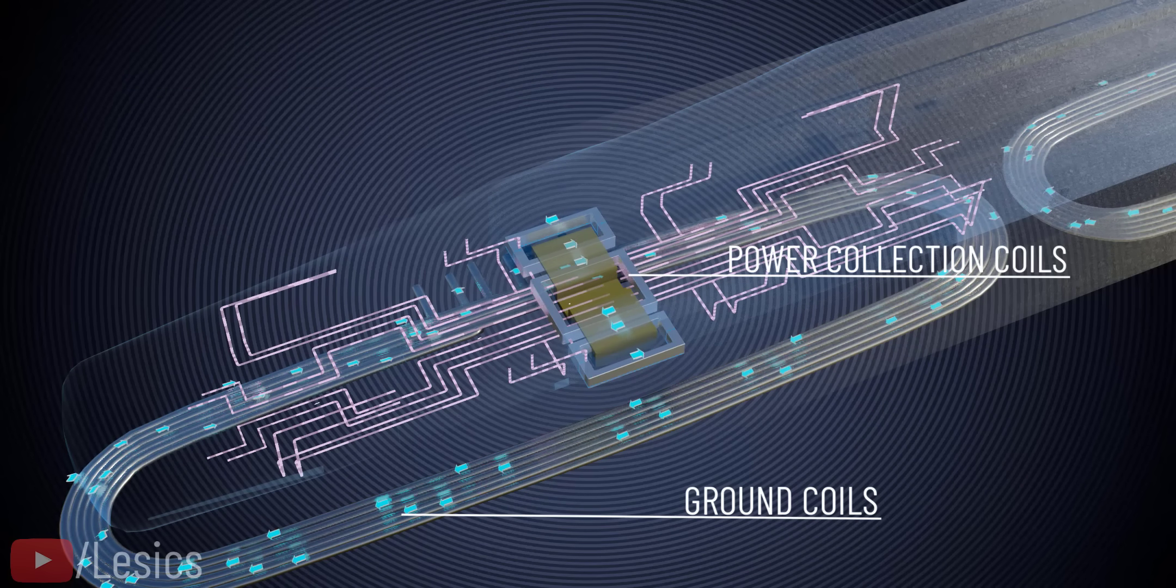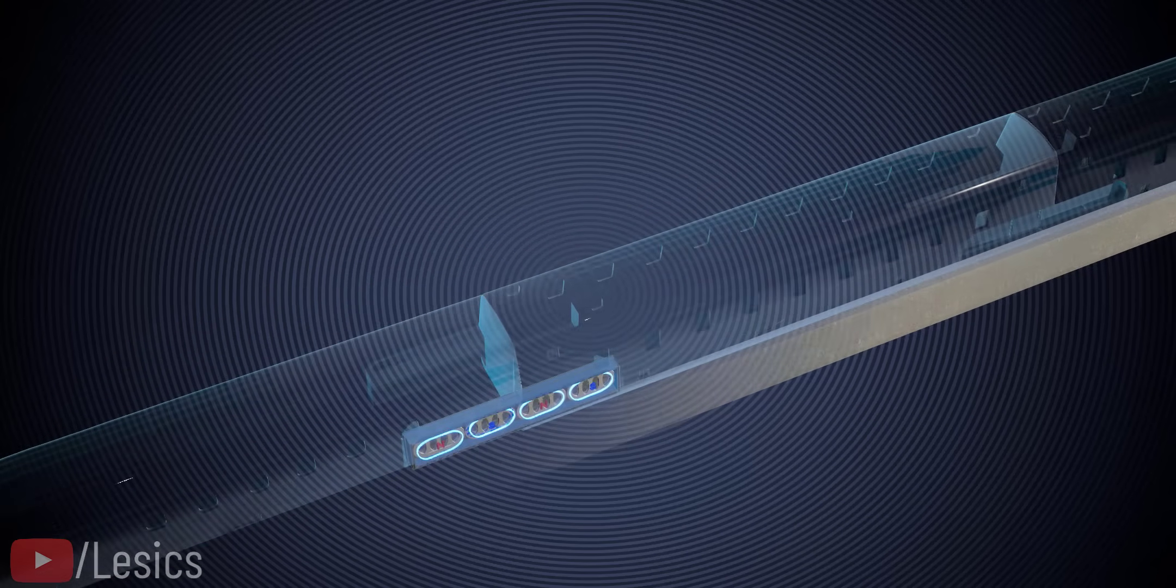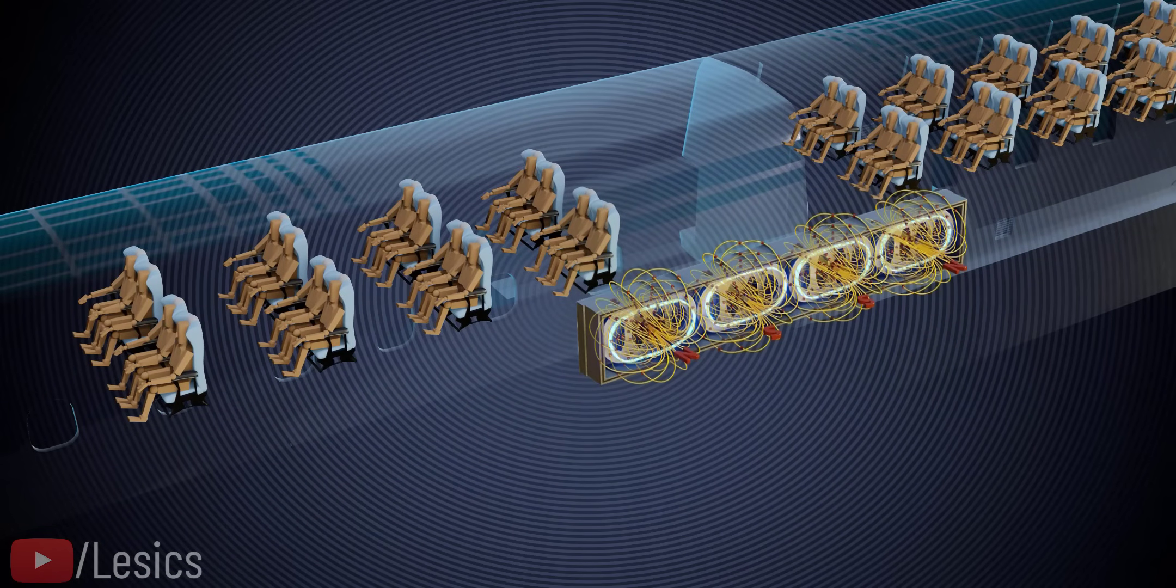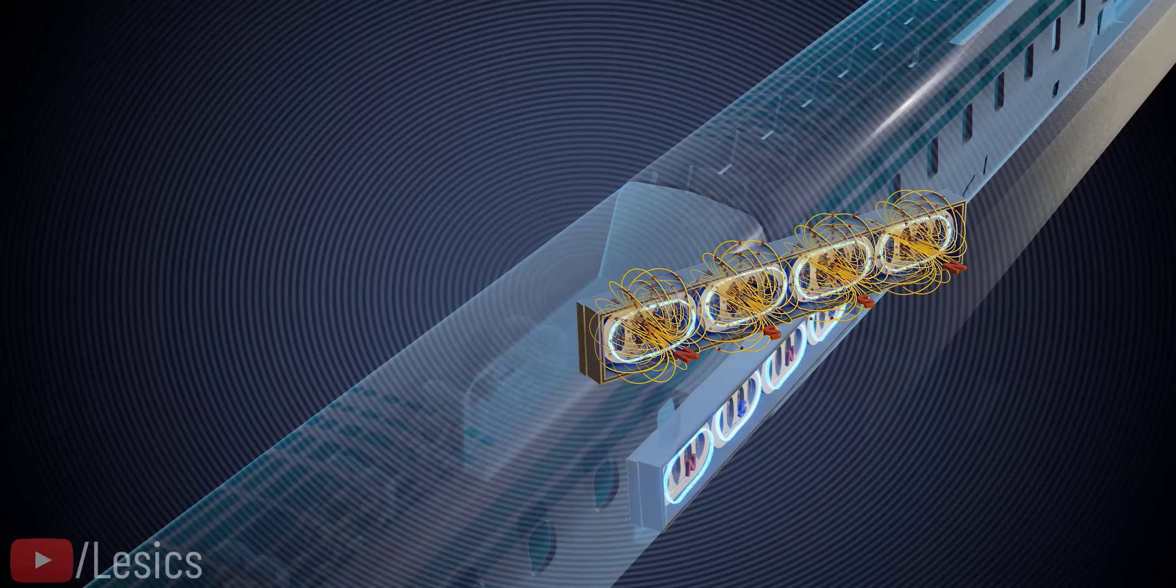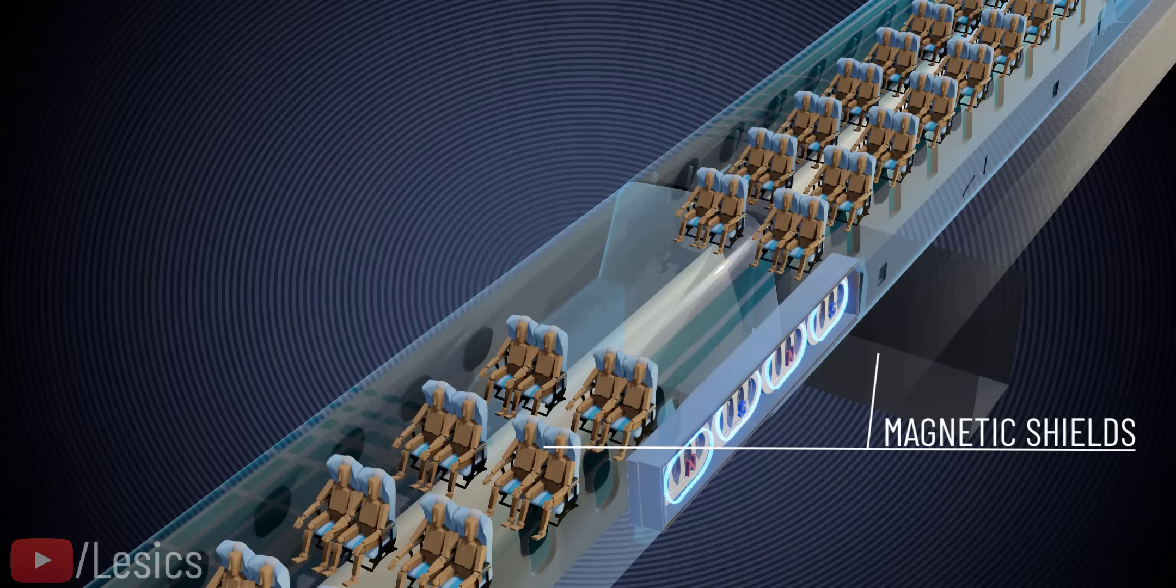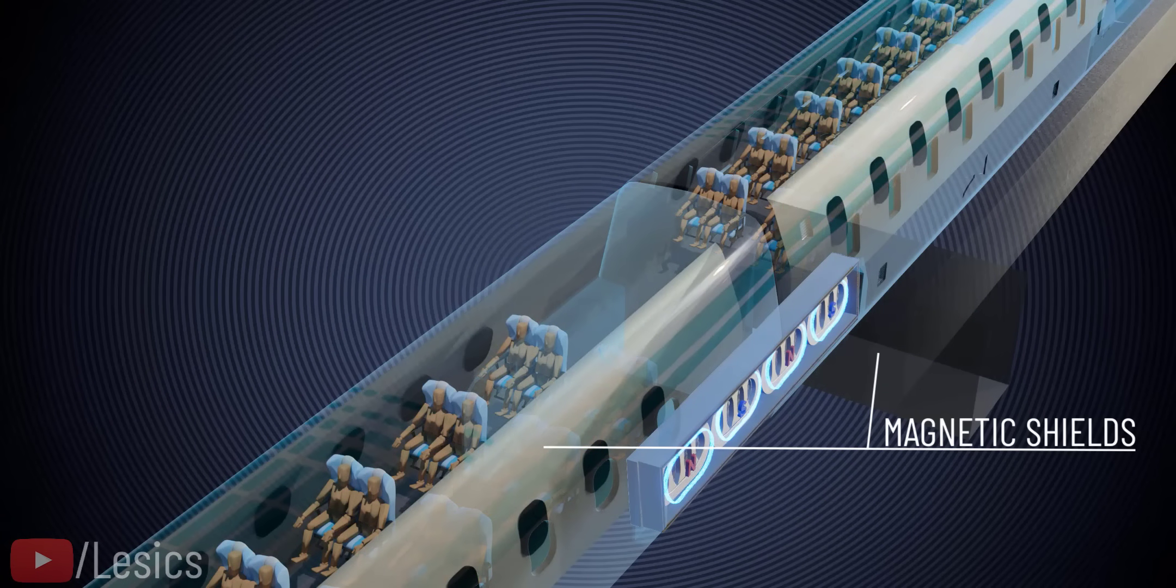The strong magnetic field the superconducting magnets produce can have health hazards on passengers. To avoid this unwanted effect, magnetic shields are used on the rolling stock and passenger embarkation facility, thus keeping the strength of the magnetic field below ICNIRP guidelines.